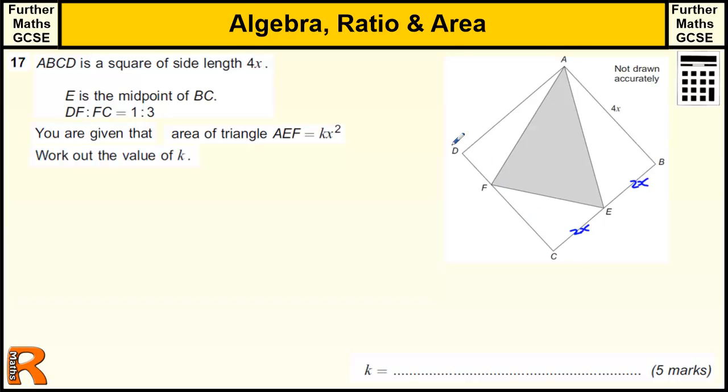And F is along DC in the ratio 1 to 3, so this is going to be x and this is going to be 3x, and we know this is 4x as well.